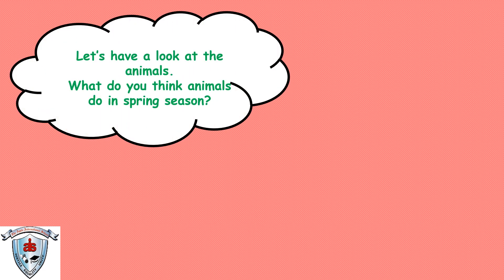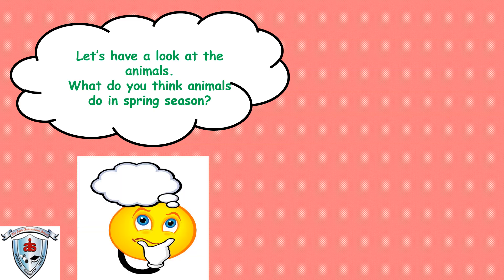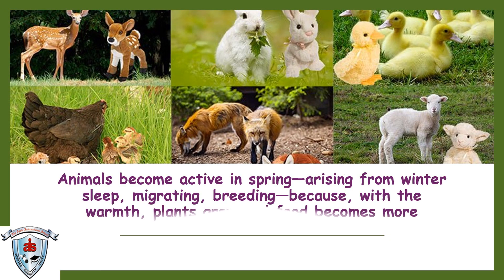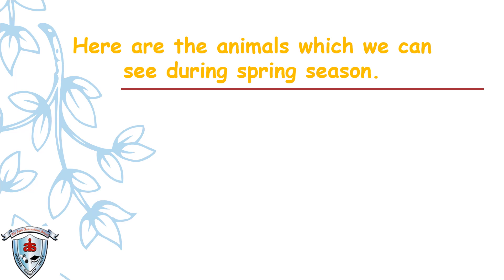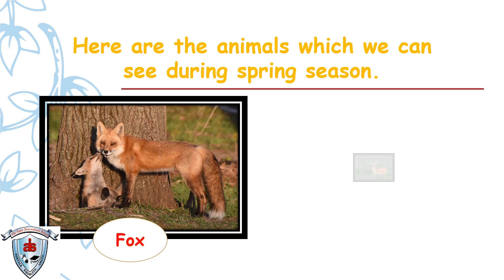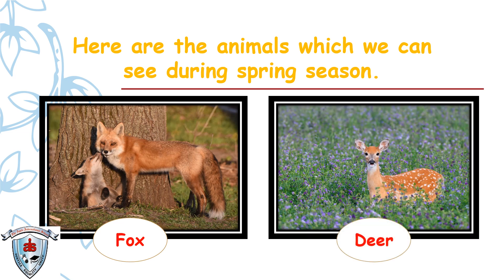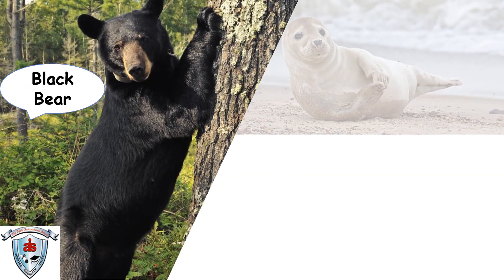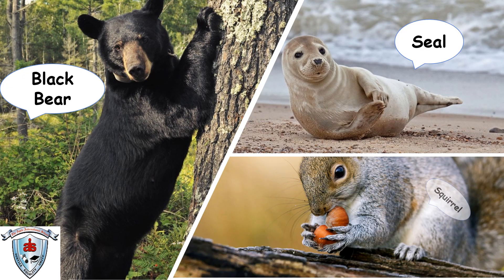Let's have a look at the animals. What do you think animals do in spring season, children? Let's explore that. Animals become active in spring, like arising from winter's sleep, migrating, and breeding, because with the warmth, plants grow and food becomes more available. Here are the animals we can see during spring season: fox, deer, black bear, seal, and squirrel.